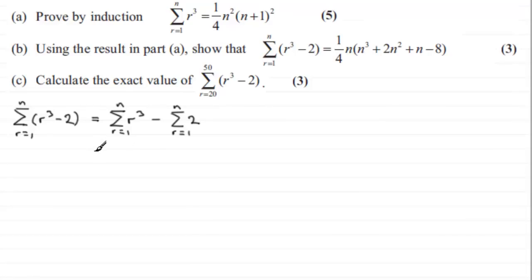Now we can use the result from part A that sigma r cubed is equal to a quarter n squared multiplied by n plus 1 all squared. Now when it comes to minus sigma of a constant, in this case 2, we're adding up 2 n times. So the result is going to be 2n. So we're going to subtract 2n from here.